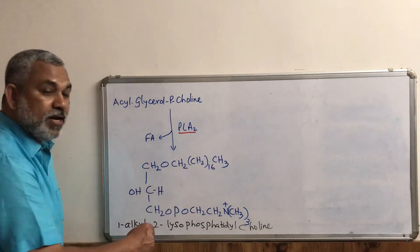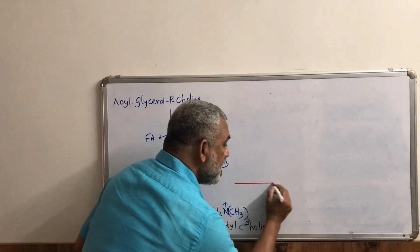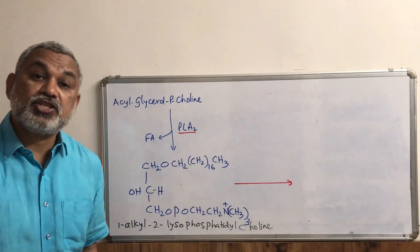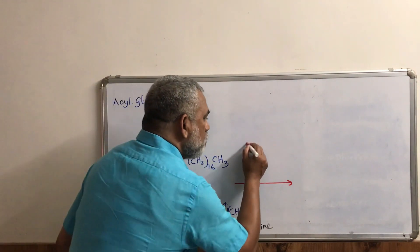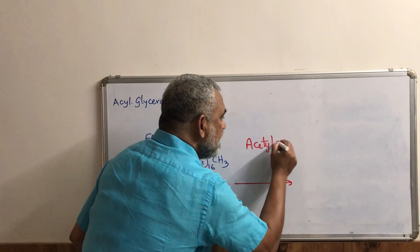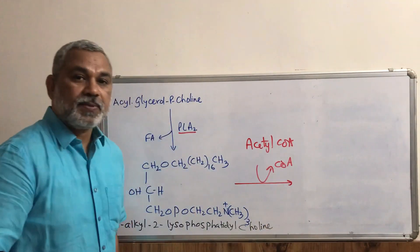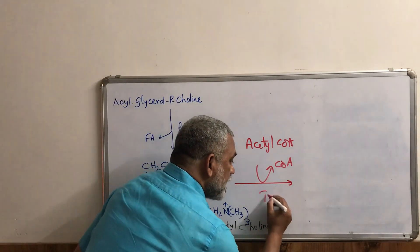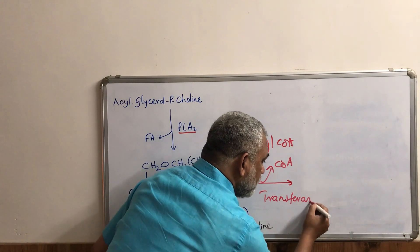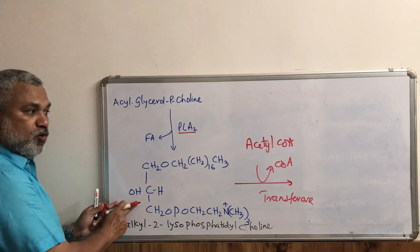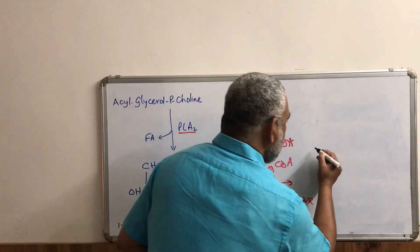In the second step, an acetyl group is introduced. Acetyl-CoA is the donor and CoA is removed, catalyzed by a transferase enzyme. The acetyl group gets incorporated at position two, giving us the final structure of platelet activating factor.